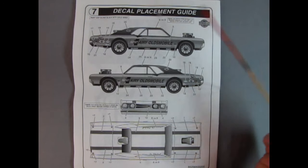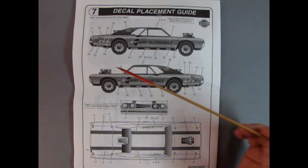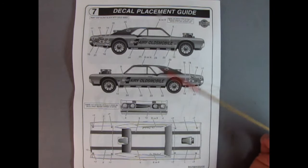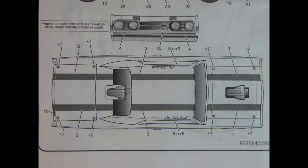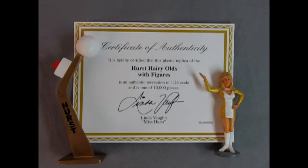On the back of the instruction sheet, we have the decal placement guide. You can see just how many decals are all over the entire body of the model kit. There are lots and lots because this is a Pro Modeler decal sheet. Also included is a certificate of authenticity. It's certified that this plastic replica of the Hurst Hairy Olds with figures is an authentic recreation in 1:24 scale and is one of 10,000 pieces. Here we have Linda Vaughn's signature as well, and there's the Linda Vaughn figure and the Hurst golden shifter. Before we carry on, I'm just curious how many people actually saw Linda Vaughn racing the Hurst Hairy Olds at the drag strip back in the day. If you're one of those lucky people, let us know in the comments.